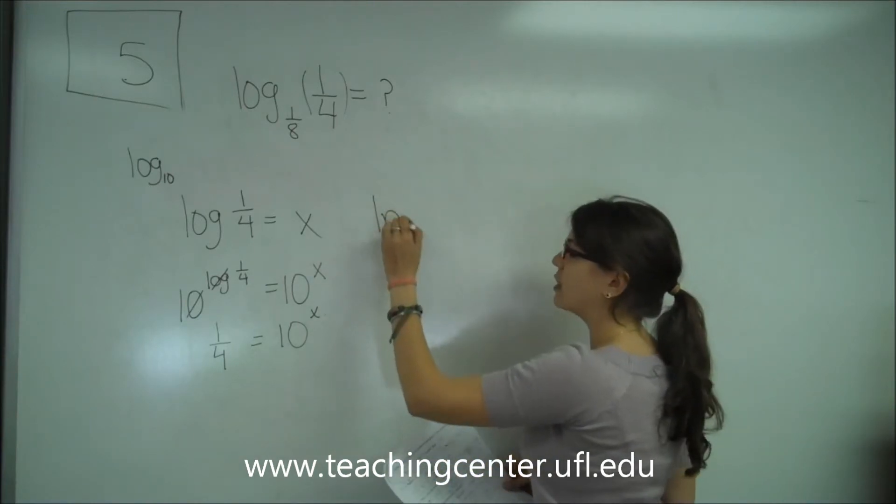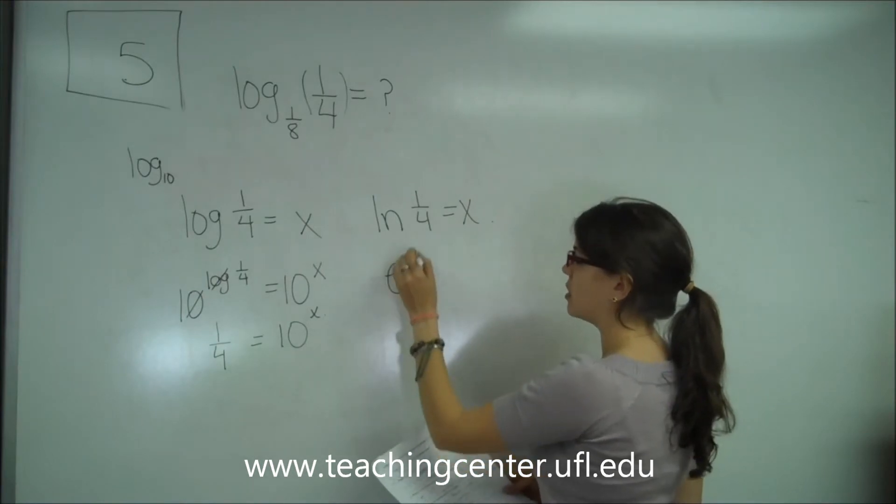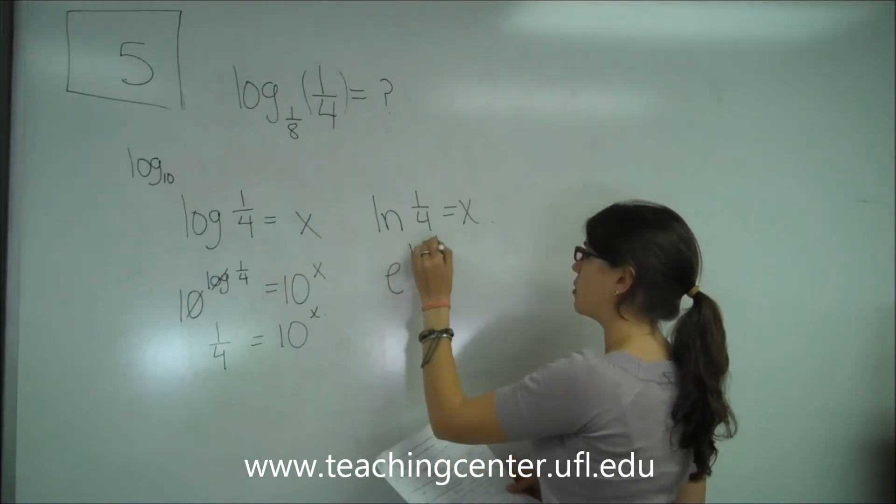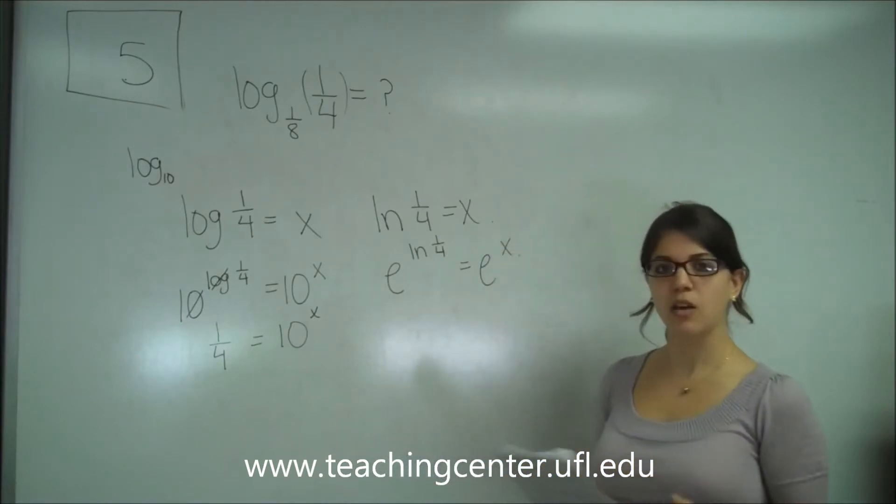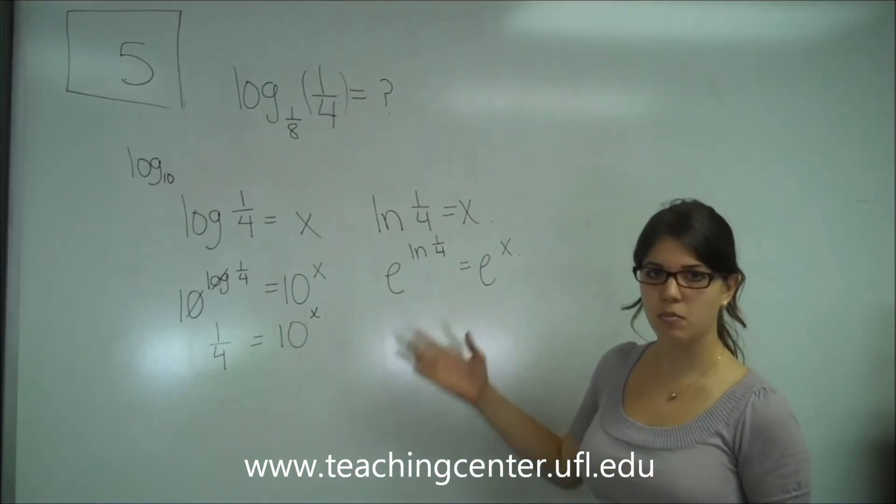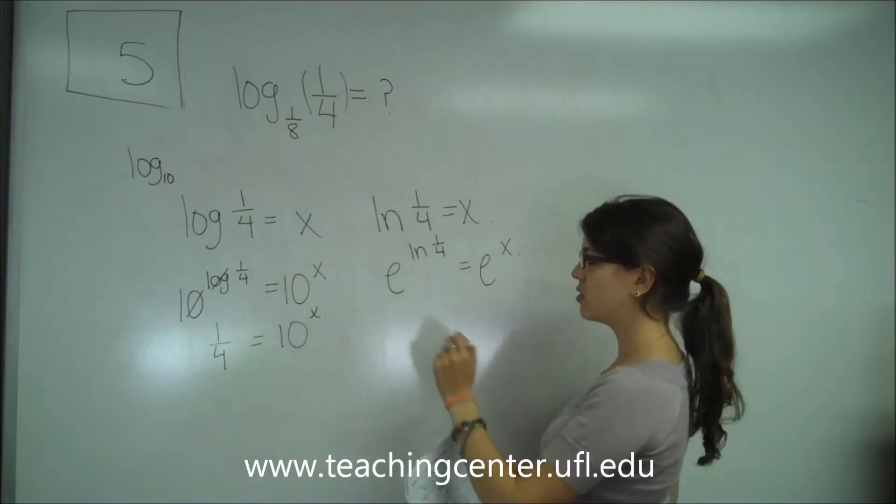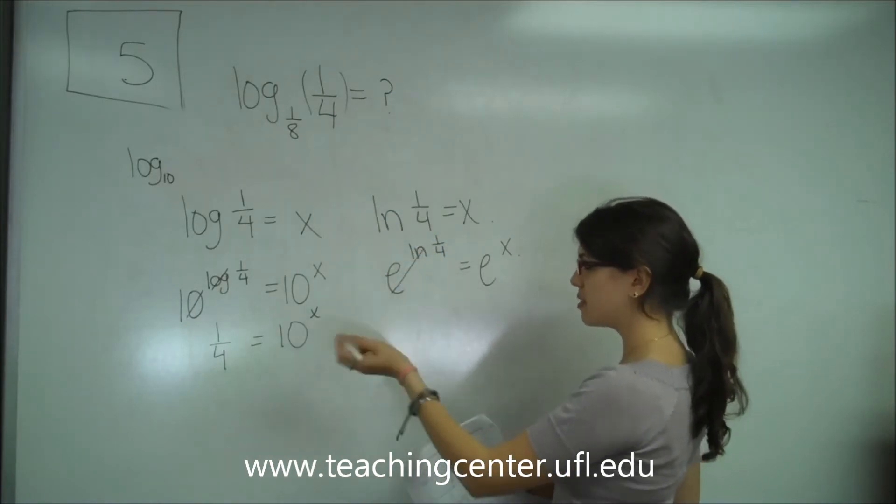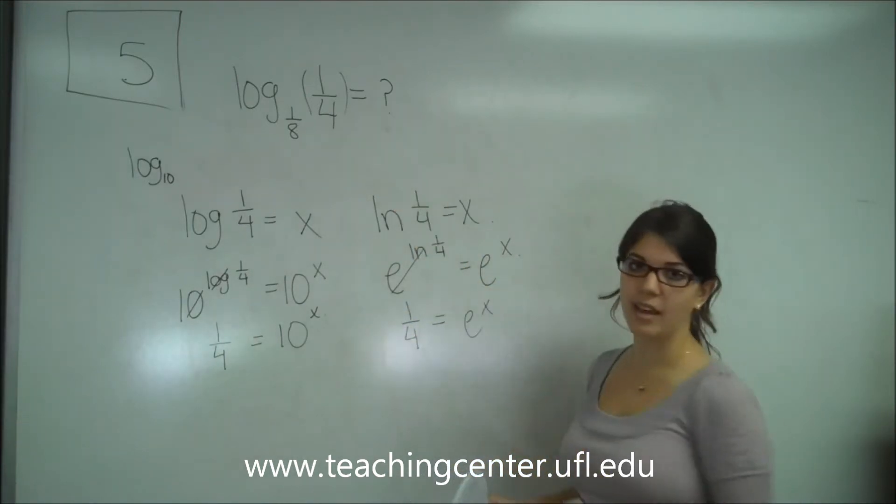Also, if you had ln of 1/4 equals x, what you would have done is raise both sides to the e. Some of you guys do this without writing at the step, so it might look weird. You just say, oh, I'm going to raise this side to the e, and the ln is going to go away. But that's basically what you're doing, and that's why you need to know why you're doing it, because of cases like that.